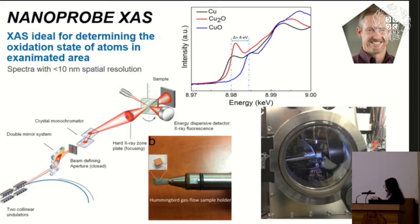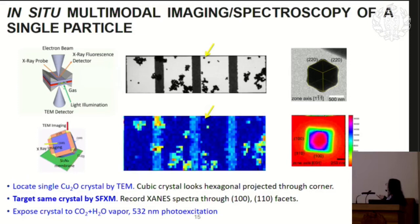This is the sample on the grid. The multi-modal cell allows investigation by high-resolution transmission electron microscopy to identify the facets being measured, plus X-ray detection and laser illumination. We chose this particle because the fluorescence X-ray signal indicated it was a single particle. Under TEM and X-ray microscopy we identified the facets: 1-1-1, 1-0-0, and 1-1-0, which is different from the others. We then wanted to understand the active sites of each of those facets.